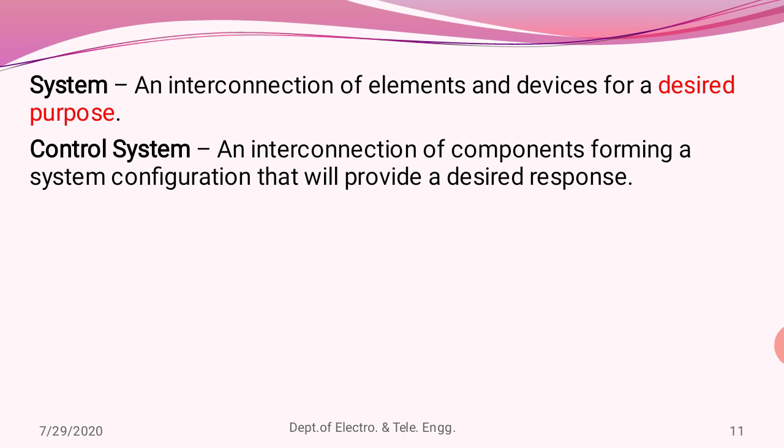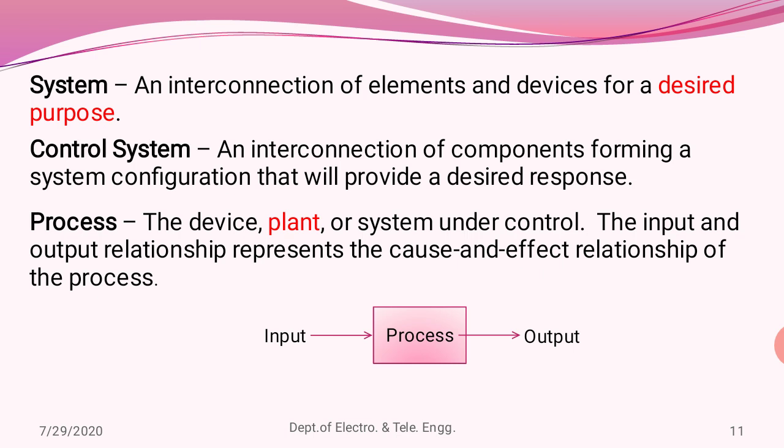A system is nothing but an interconnection of elements and devices for a specific purpose. Combining control and system, a control system forms an interconnection of components such that when processed it will provide the desired response. A process is a system or a plant whose function is to control the required parameter. The entire control system is represented as a block diagram where process sits between input and output, taking the input, processing it as per the requirement, and producing the required output.